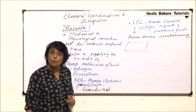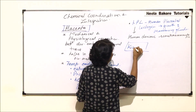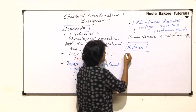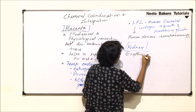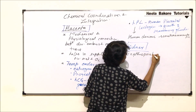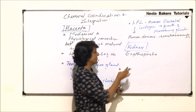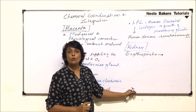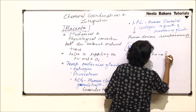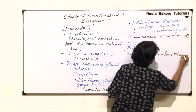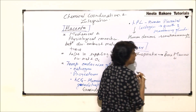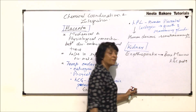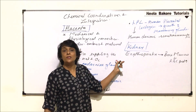Next, we are talking about a hormone secreted by the kidney. The hormone is called erythropoietin. As the name tells us, it stimulates the bone marrow cells to produce RBCs — that is, bone marrow cells are stimulated and RBC production increases.